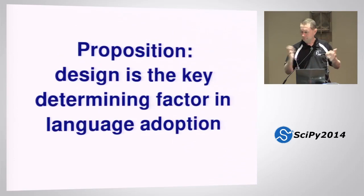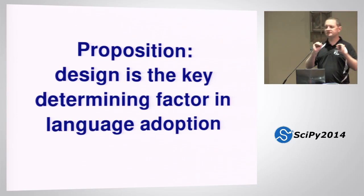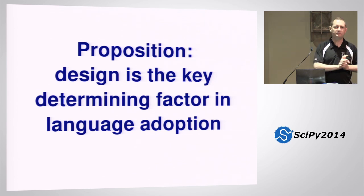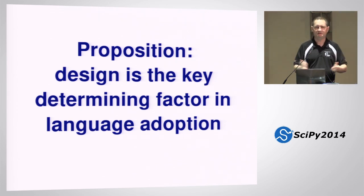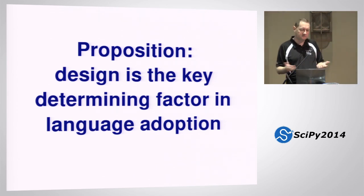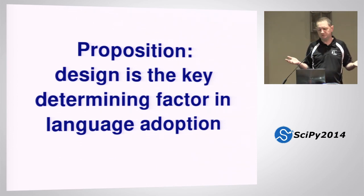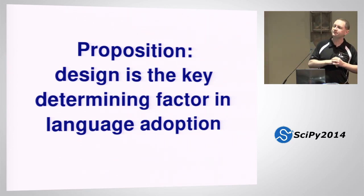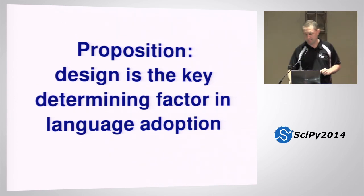Something that you see a lot about in the open source community is people talking about the adoption of programming languages and other tools that we use to think. So proposition: language design is the key determining factor in whether or not a language gets widely adopted. As technologists and programming language designers, we'd kind of like to think this is true. We spend a lot of our time thinking about how do we make our languages better. Does real-world experience actually back up this assertion?